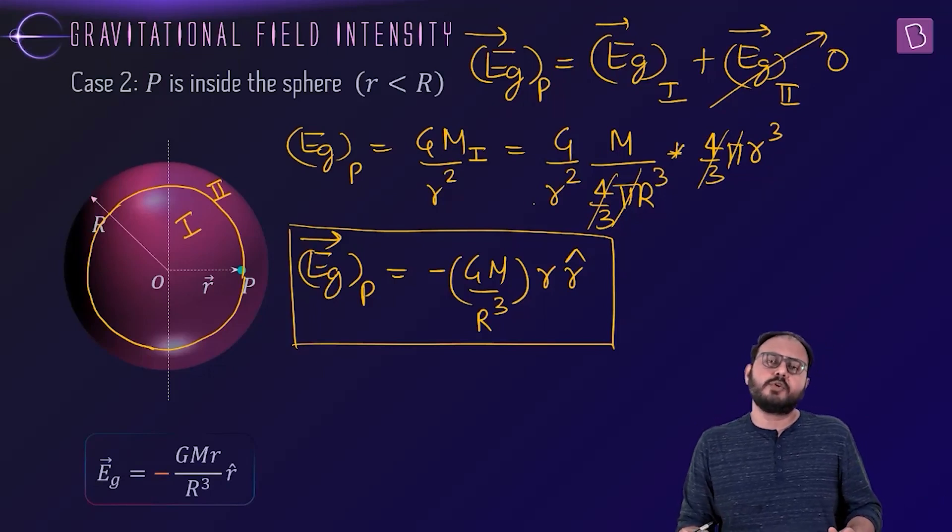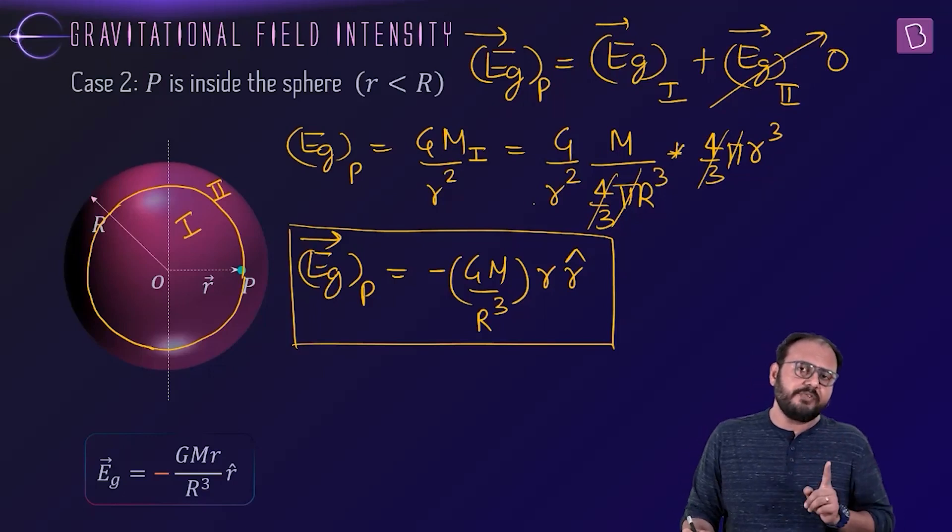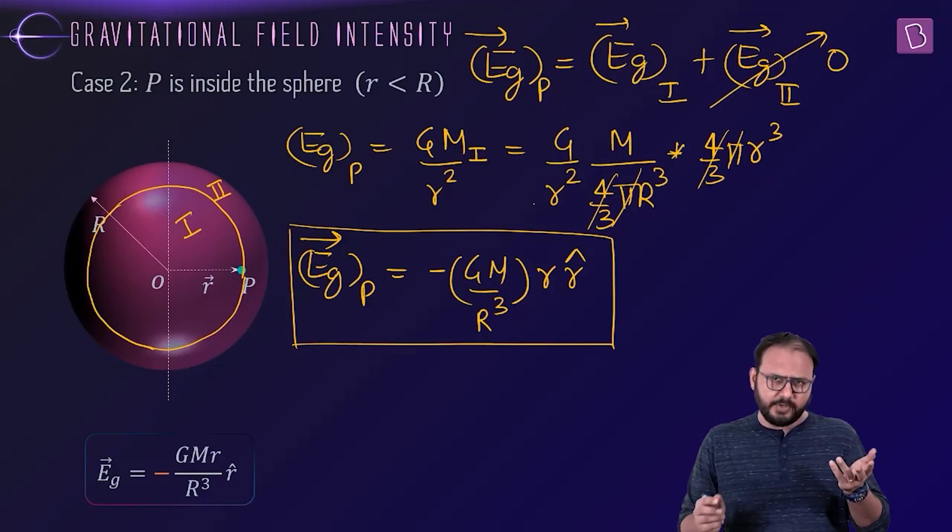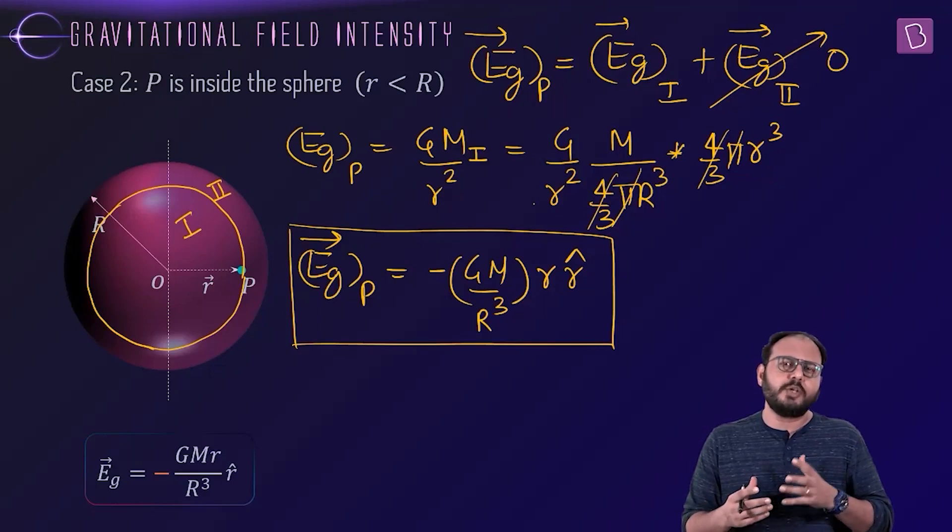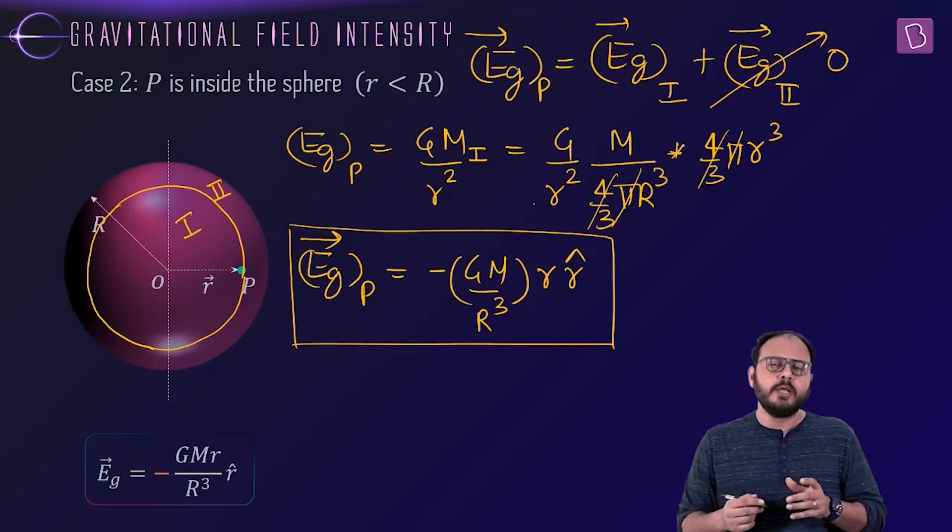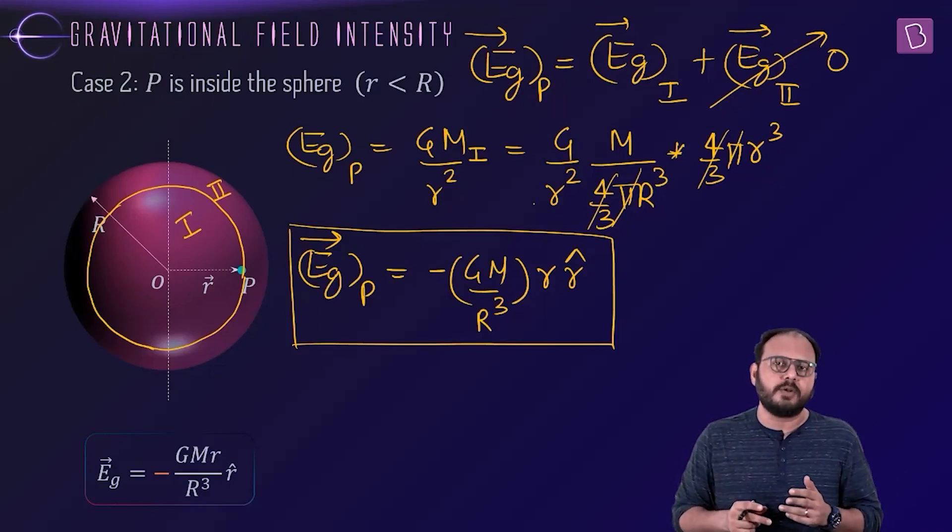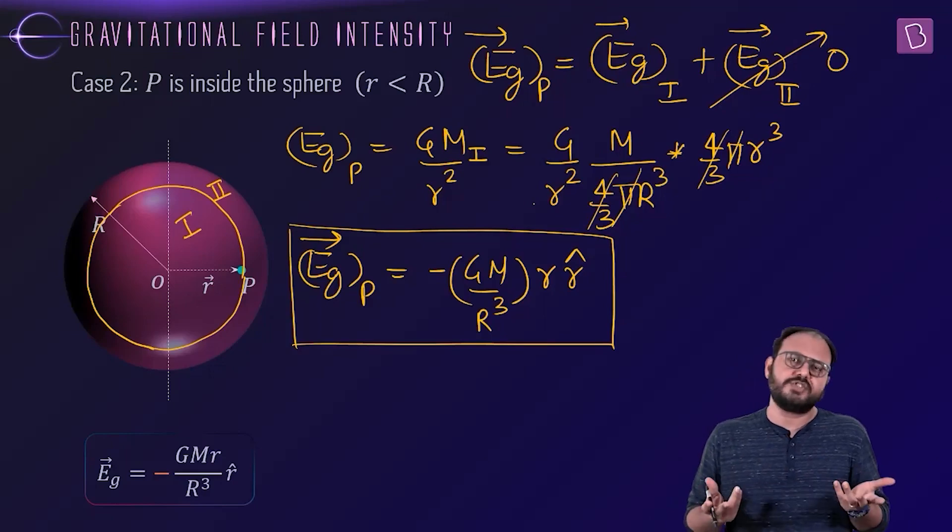If you remember, there was rho r by three epsilon not also. Electric field in a solid sphere was rho r by three epsilon not. You know why it doesn't have a counterpart here? Because capital K used to be one upon four pi epsilon not, so you could further decode K. Here, G doesn't decode into anything. G is just G, capital G.